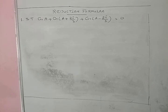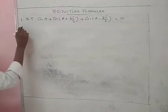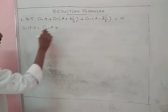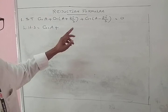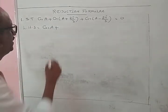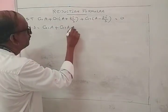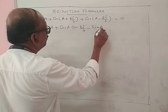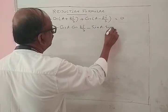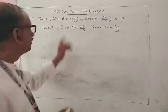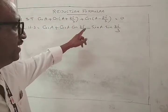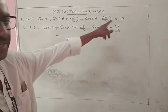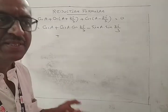Take the left hand side. Apply the cosine addition formula: cos(A + B) = cos A cos B minus sin A sin B, and cos(A - B) = cos A cos B plus sin A sin B.